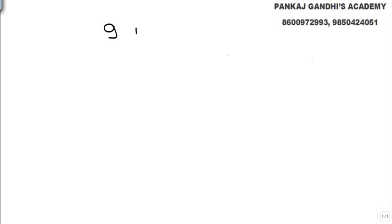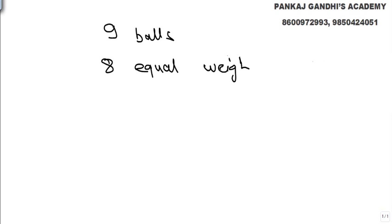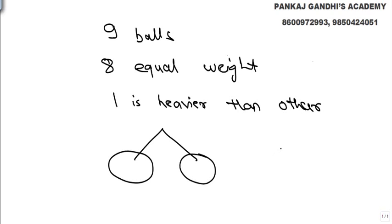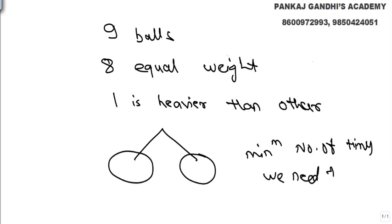The question says: we are given nine balls, out of which eight are of equal weight and one is heavier than the others. This is a very commonly asked problem. Using a two-sided weighing pan, we can only compare things for equality or heavier/lighter. What is the minimum number of times we need to use the balance to find the heavier ball?